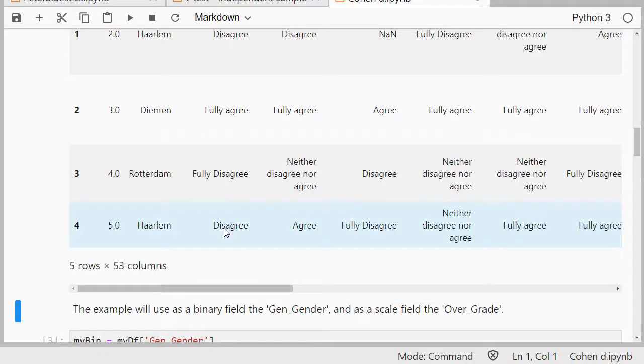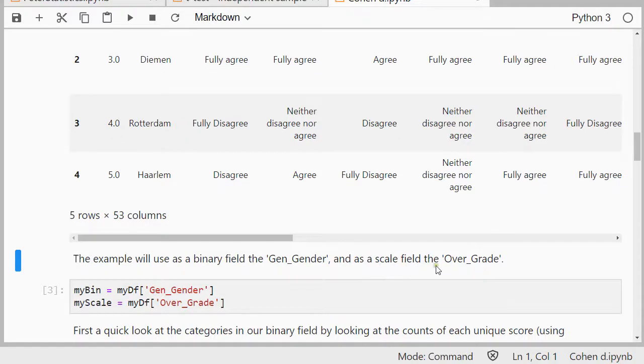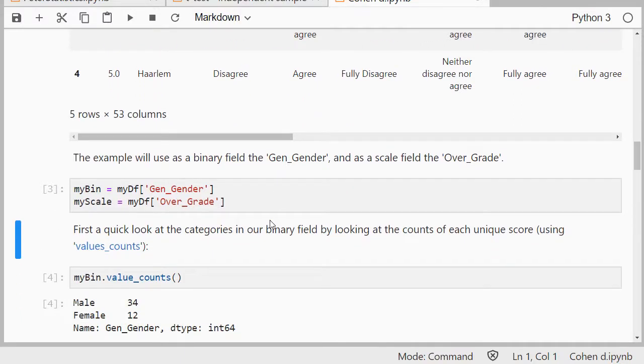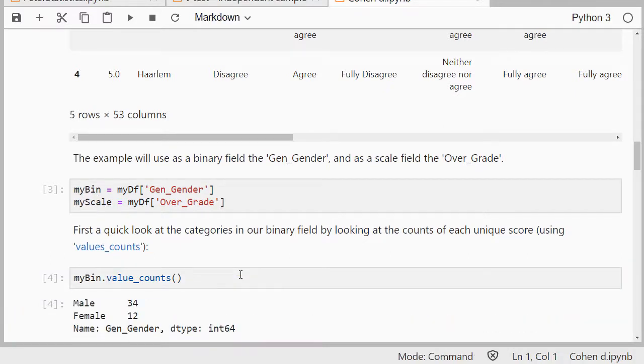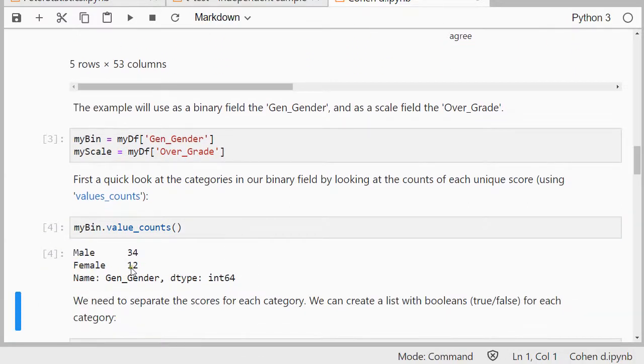From here I'll be using as a binary field the gender, which only had two options, and as a scale field my overall grade. I've done this before, also in my video on the independent samples t-test, so this shouldn't be too complicated. Just to have a quick look at the values of that binary category, I'll simply use value counts, and indeed there was only male and female to choose from in this case, and there were 34 males and 12 females.